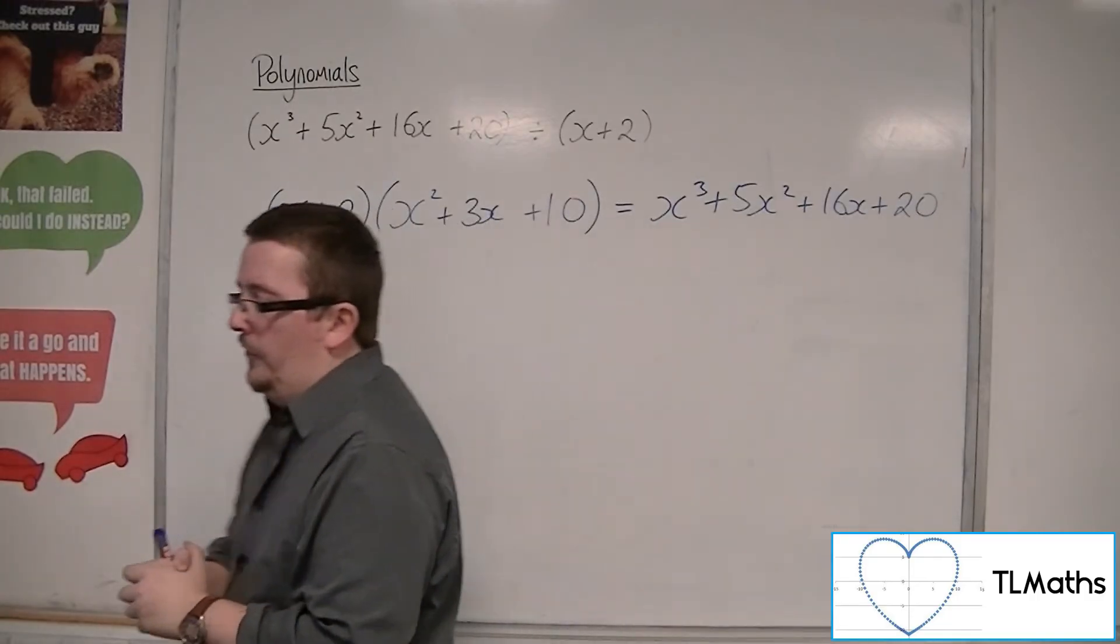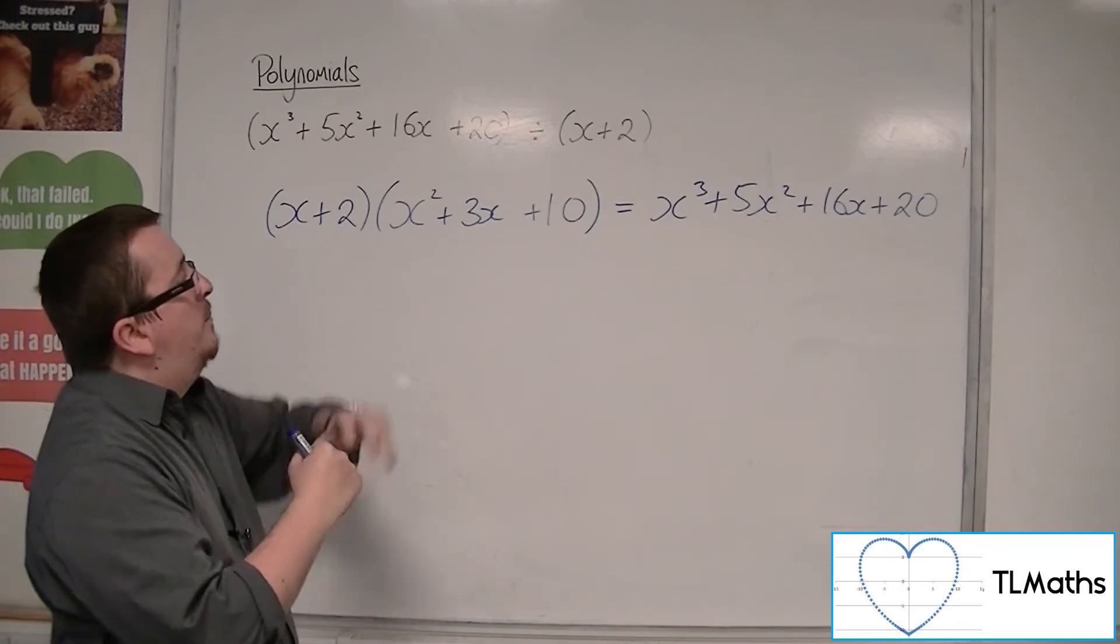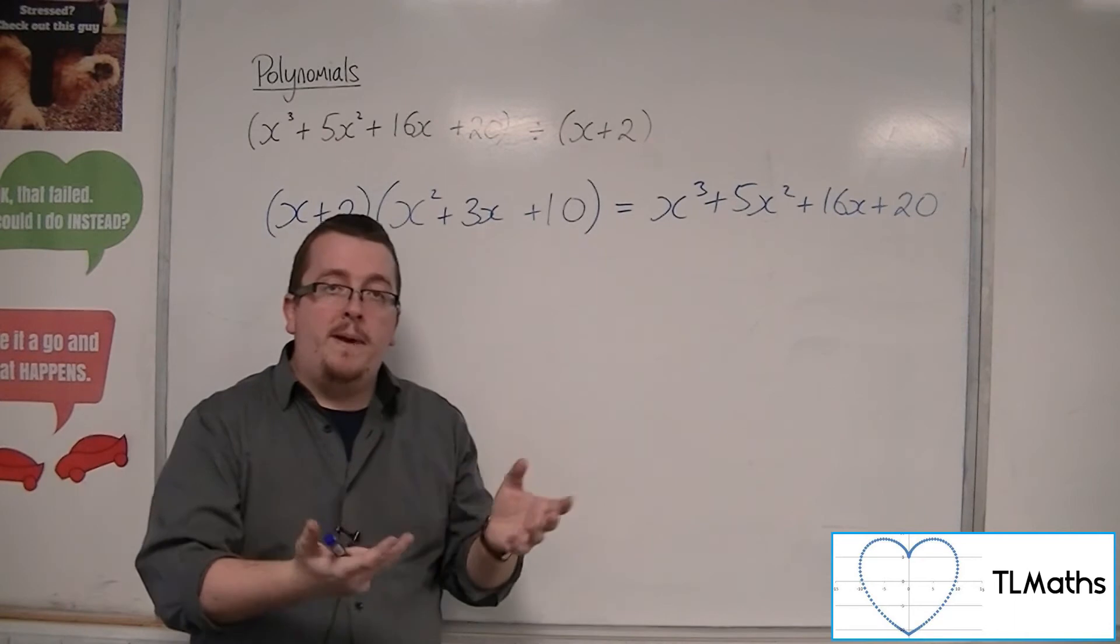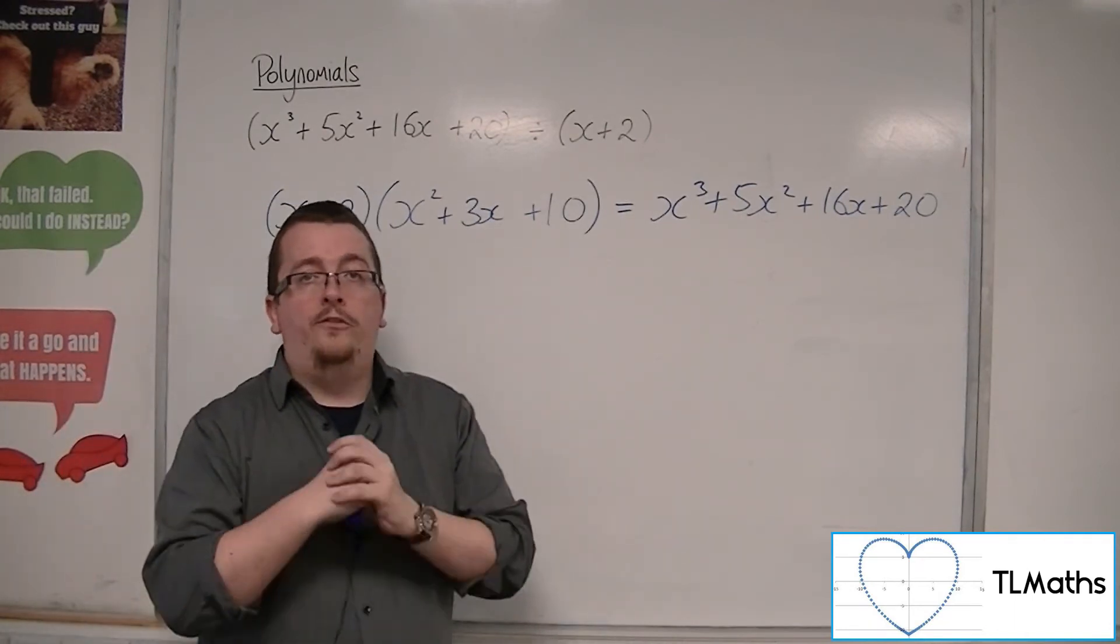And we will see examples of using polynomial division where you can get examples where this does not go cleanly into this and we get a remainder. And that is where the inspection method will fail.